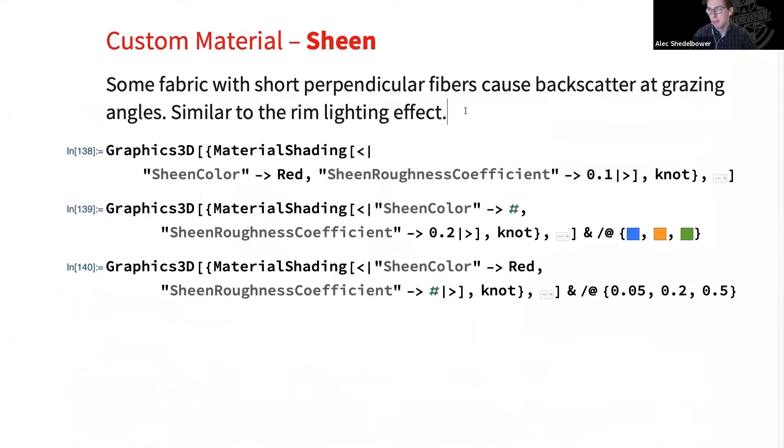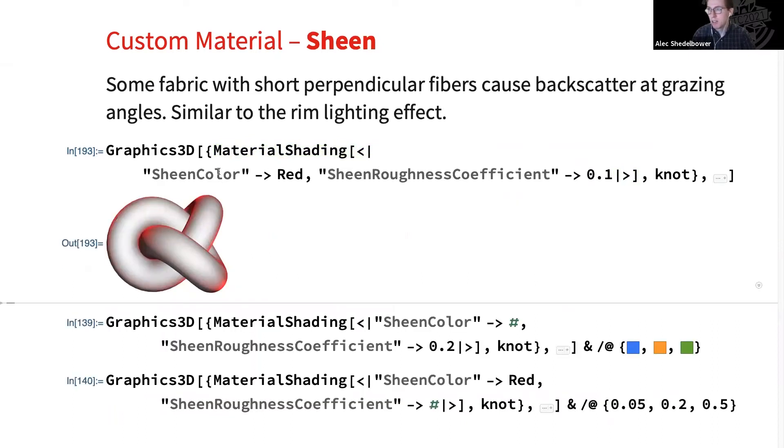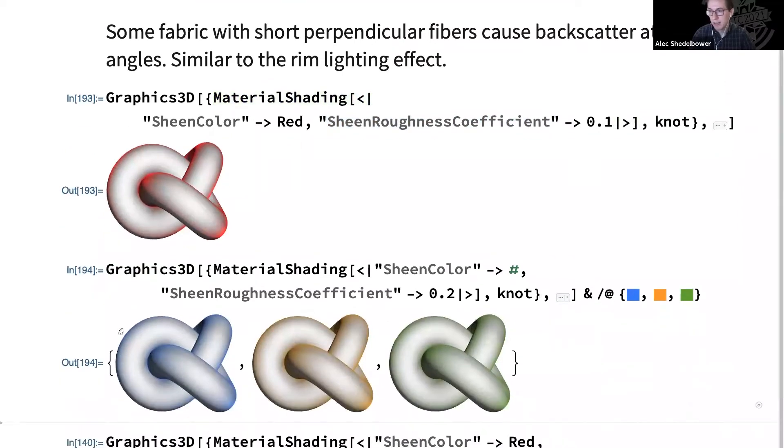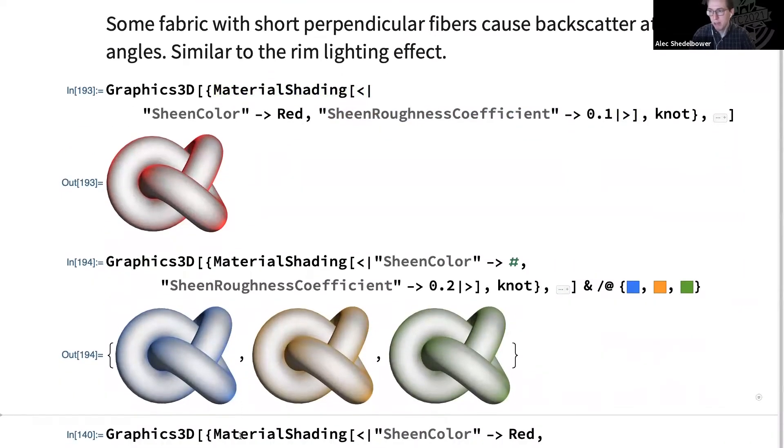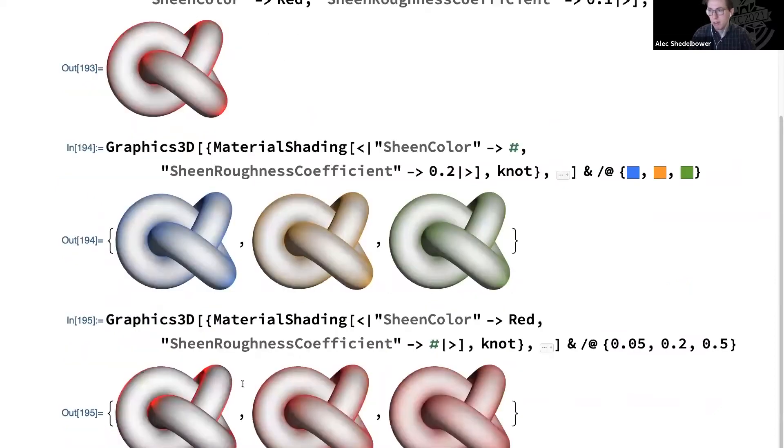Next up, we have sheen. This will be the last one I talk about for a moment. This is an effect you see in certain fabrics where they have a lot of very short fibers perpendicular to their surface. So at grazing angles, the light hits the sides of these fibers, which causes a sort of backscatter effect or rim lighting. In this case, we have also a color and roughness parameter for sheen. So here we can set it to red and we can kind of see that red glow around the edges. We can change this color here to see that rim lighting kind of change. And then we can change the roughness with very small roughness values corresponding to a very concentrated rim lighting there. Whereas the rougher you go, the more spread out it becomes.